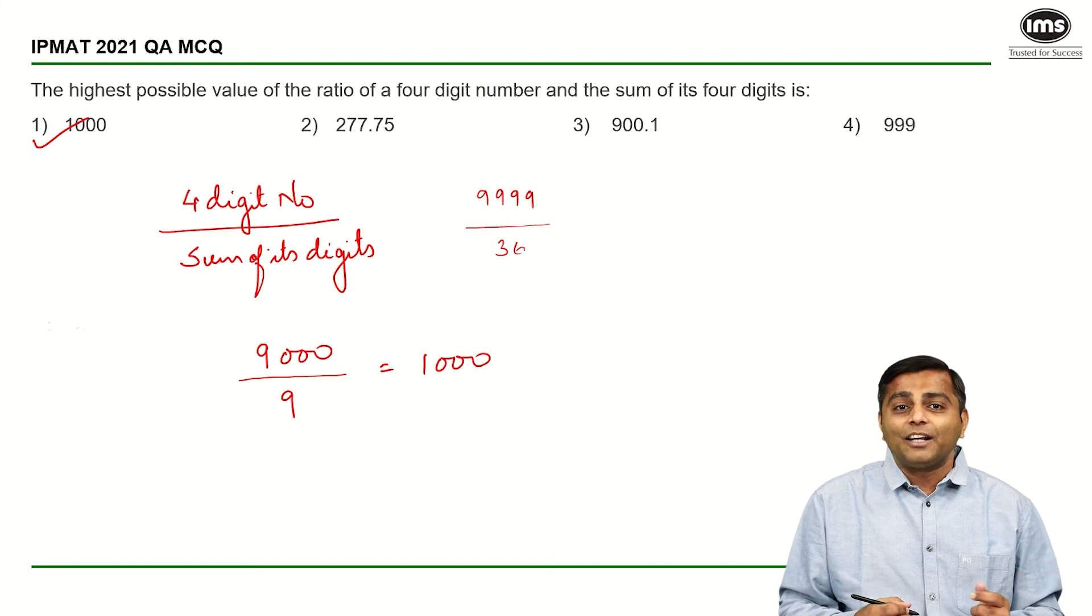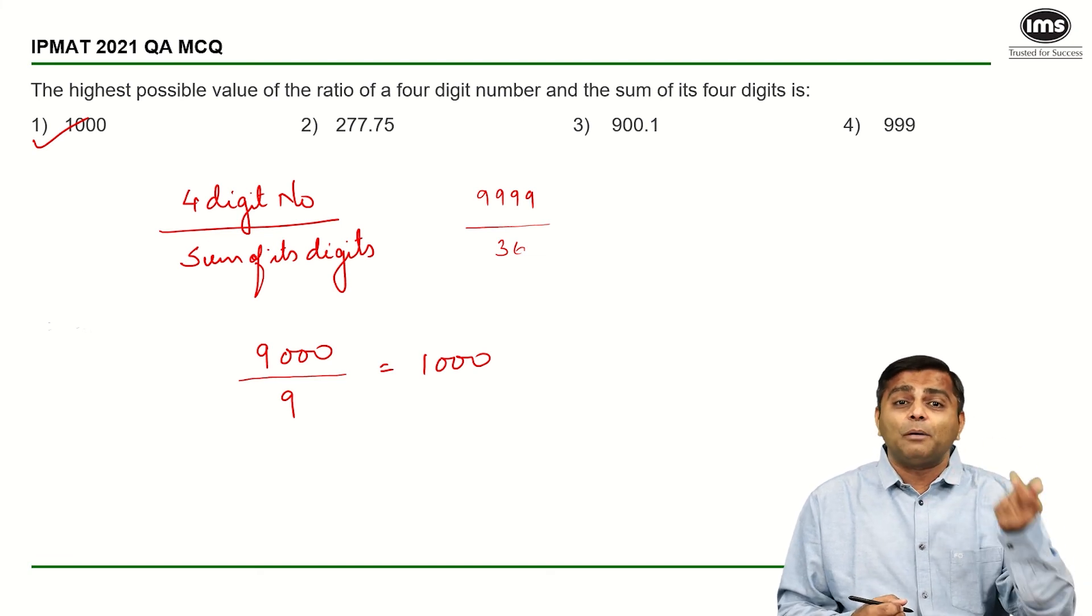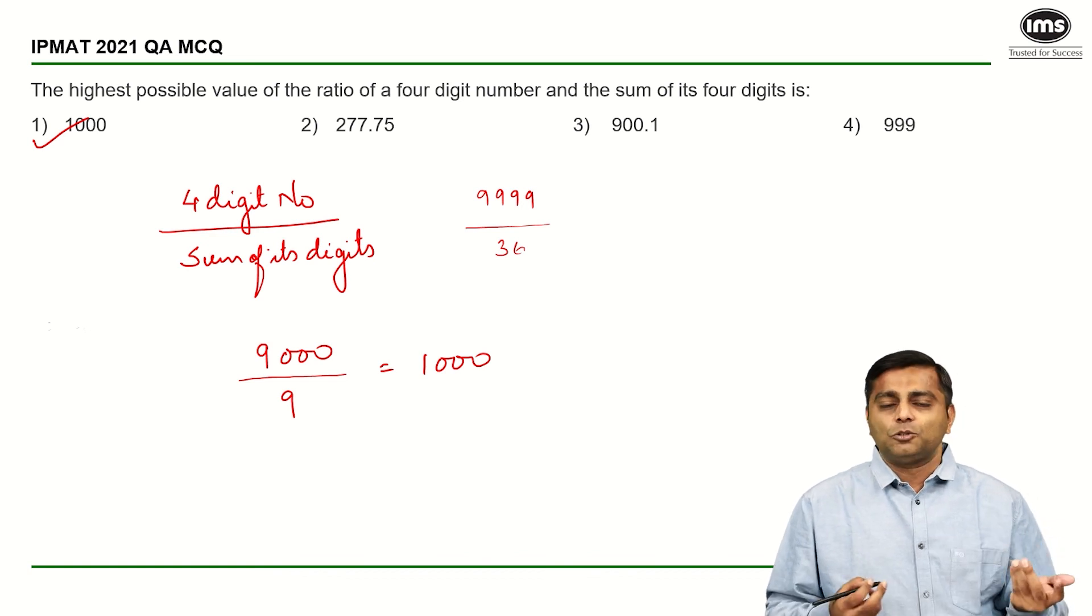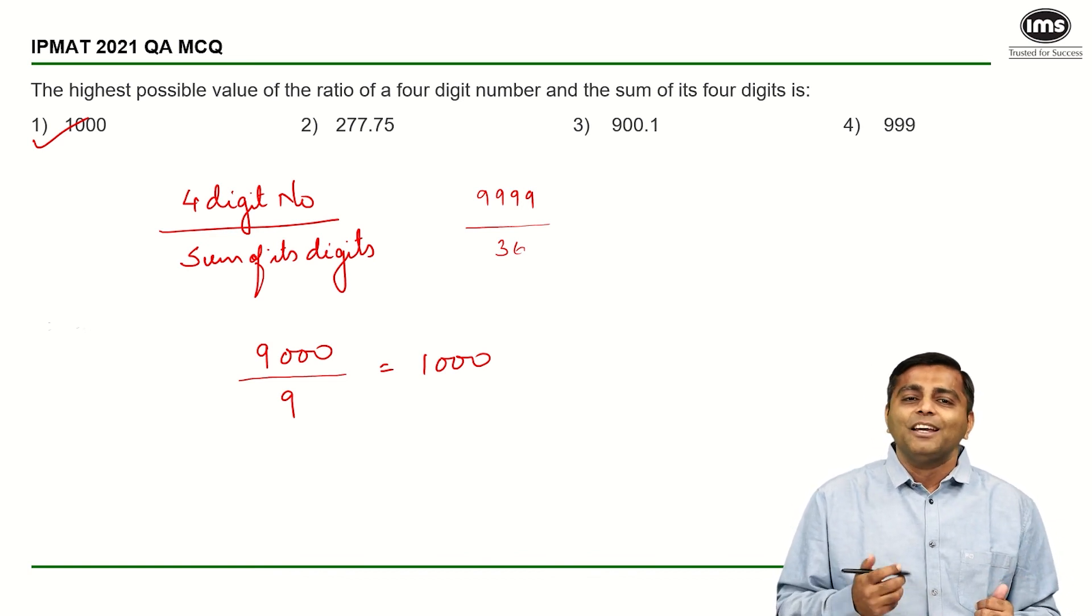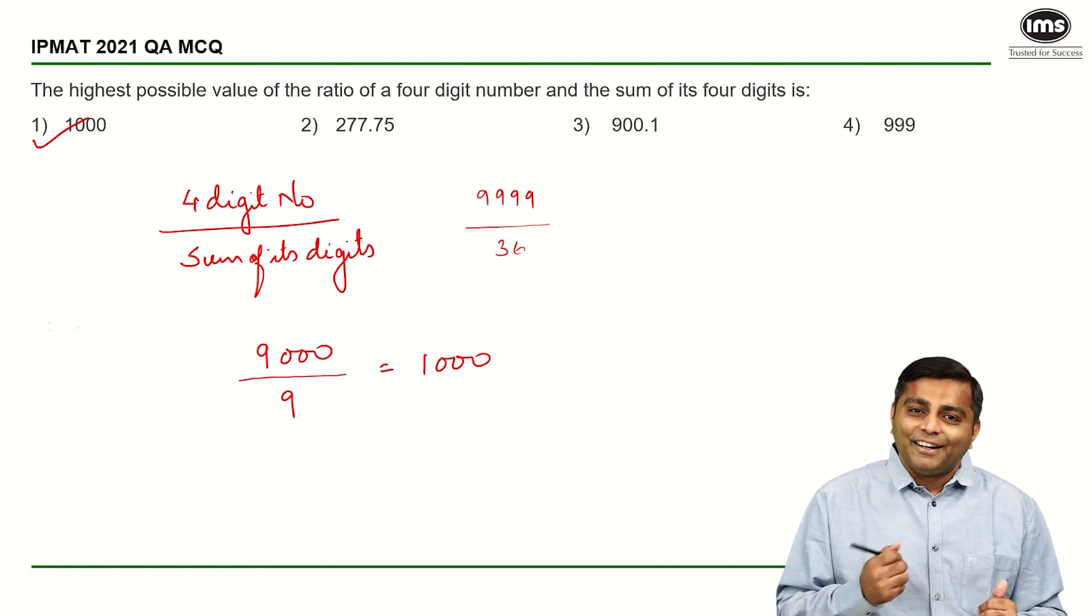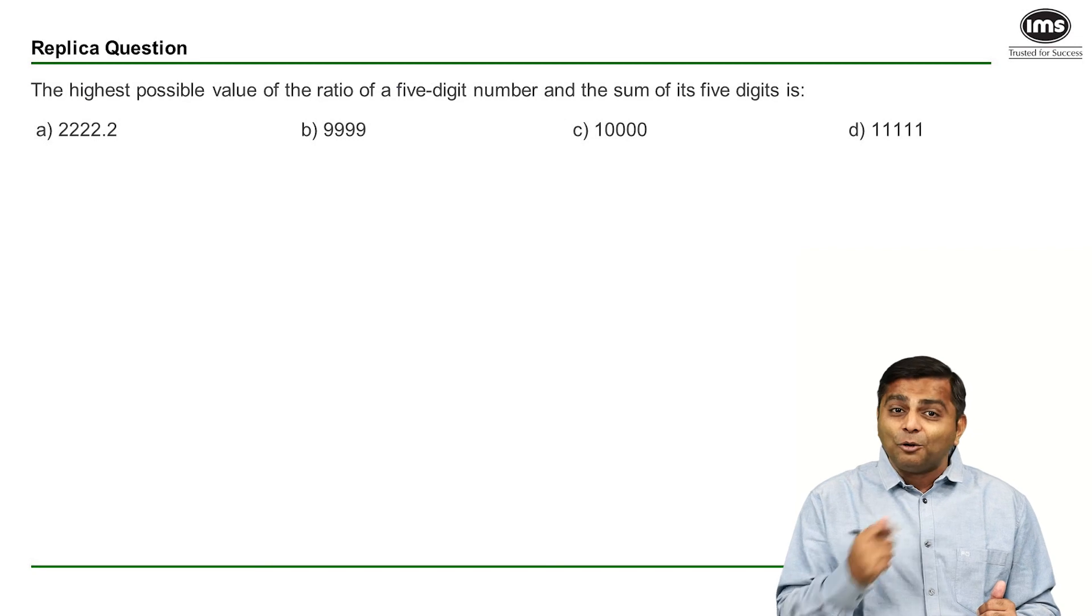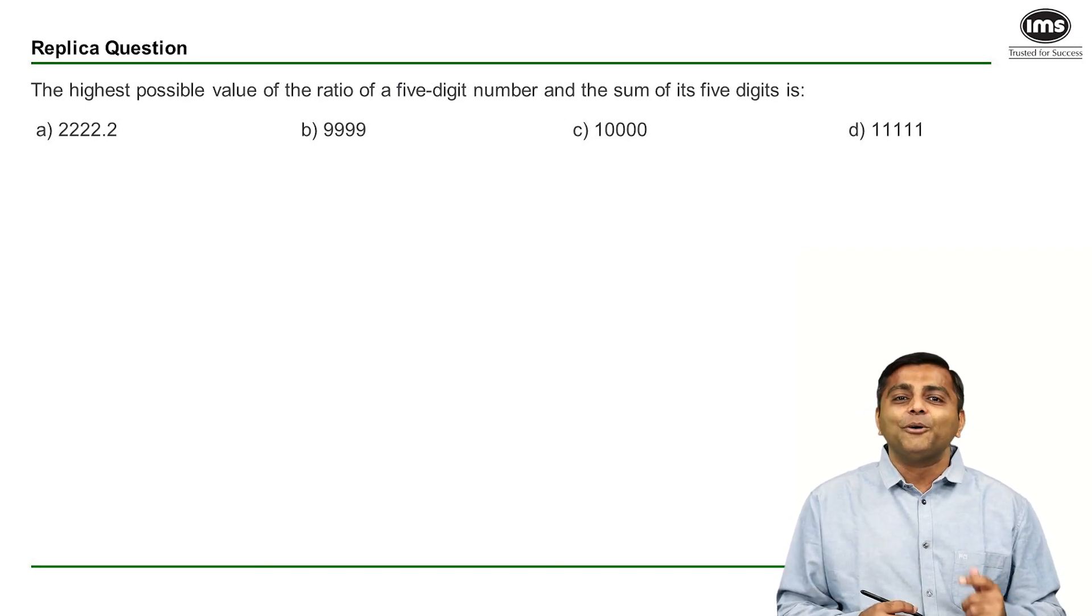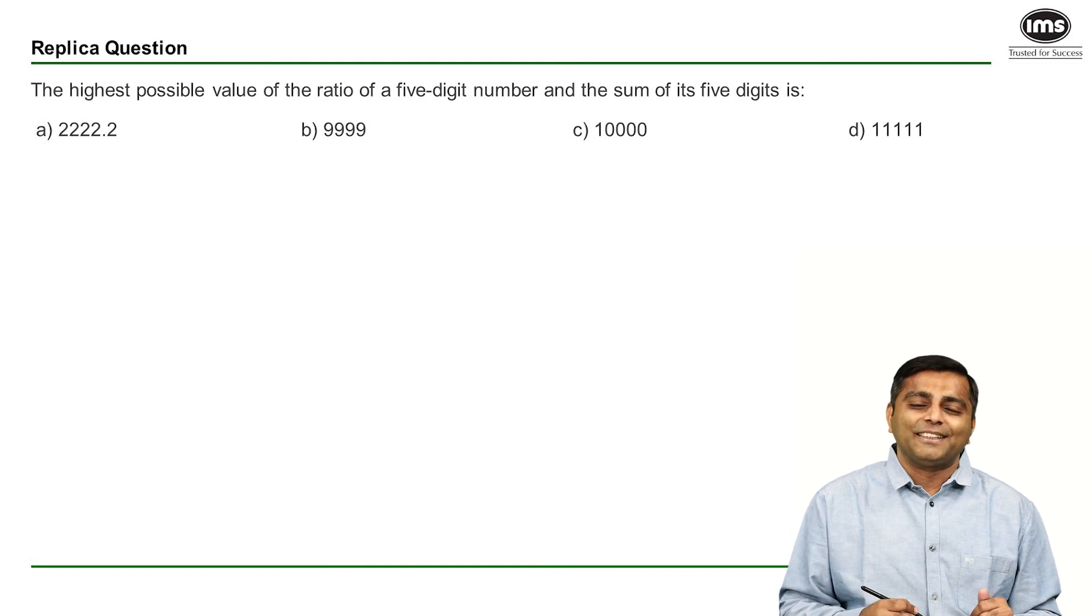So I hope that is clear. We could have obviously done 1000 upon one, that would have also been true. And 9000 upon nine is also giving us that same answer. The ratio is still turning out to be 1000. So yeah, that is the question for today. Try your hand at a replica question and do not forget to comment the answer. We will see you in the next video. Till then, happy learning and all the best.